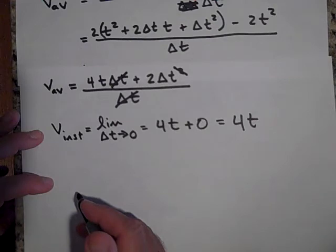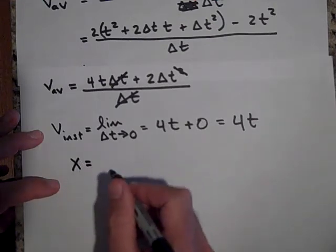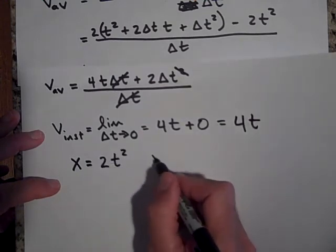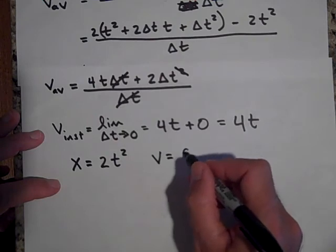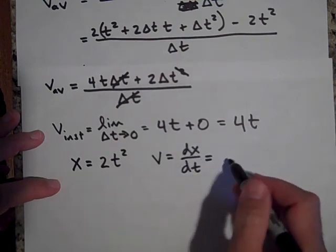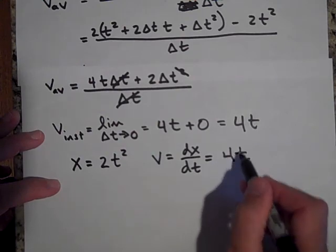Now, I'd like you to see something here. We started out with a function of x is equal to 2t squared. And it turned out that the velocity was the derivative of x with respect to time. And that was, that turned out to be, when we did all that rigmarole, it turned out to be 4t.